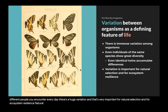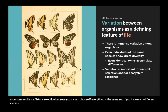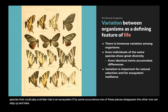That variation is very important for natural selection and for ecosystem resilience. Natural selection cannot operate if everything is the same. And if you have many different species that could play a similar role in an ecosystem, if one species disappears, the other can step up and take the place — it can occupy the niche so that the ecosystem doesn't collapse.